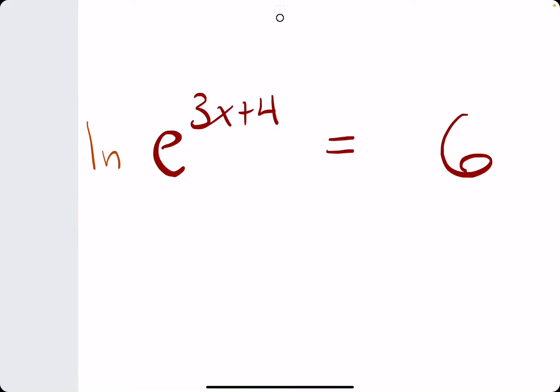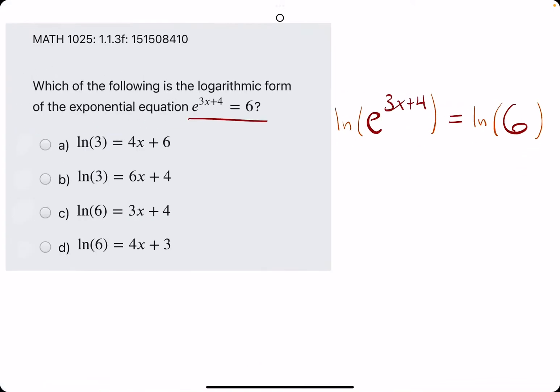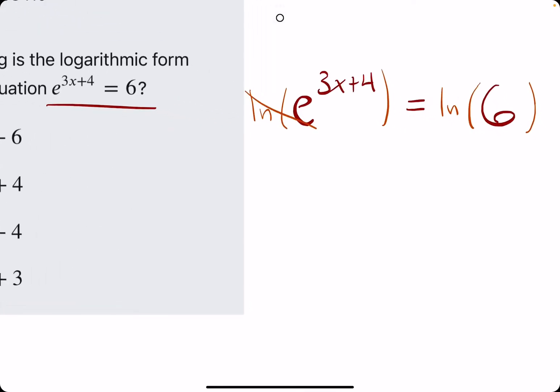How we eliminate e on both sides is by taking the ln, or the natural log, of both sides. ln and e will cancel because they are inverses, leaving us with just 3x plus 4 on the left equaling the natural log of 6.